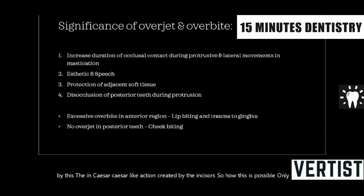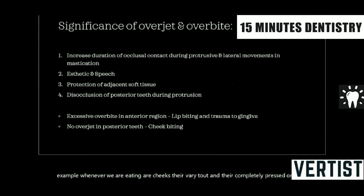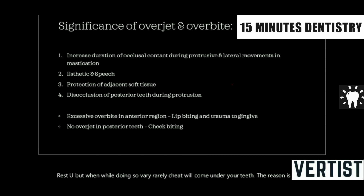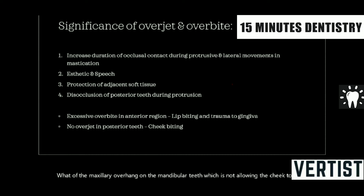Overjet is more important for protecting the adjacent soft tissue. Whenever we are eating, our cheeks are very taut and completely pressed on the teeth so that food doesn't accumulate in the vestibule. But while doing so, very rarely does your cheek come under your teeth. The reason is the overjet — the maxillary overhang on the mandibular teeth is not allowing the cheek to come between the teeth during mastication. The same applies to the tongue also, but on the tongue side the protection is less.